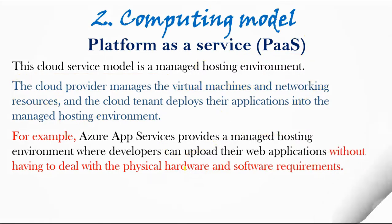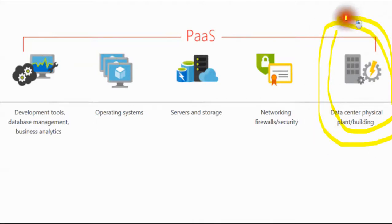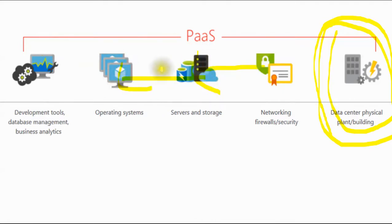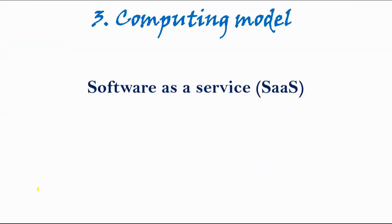For example, Azure App Services provides a managed hosting environment where developers can upload their web applications without having to deal with physical hardware and software requirements. This is what is referred to as a hosting environment. In this diagram, what's on premises — networking, servers, storage, operating system — all those things will be taken care of by the cloud provider; you can just deploy your application.